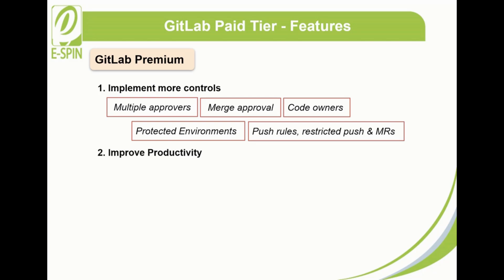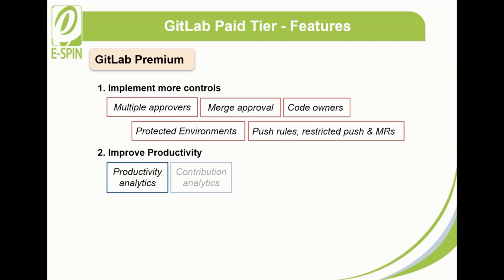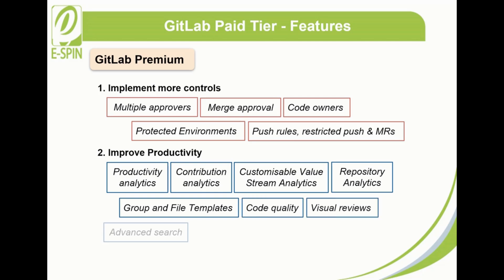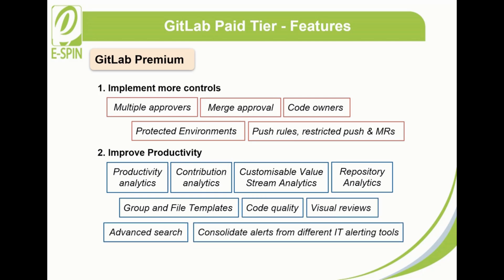2. Improve productivity. GitLab Premium streamlines login, avoids downtime, minimizes outages, and reduces latency between distributed teams to ensure productivity of the development teams. This is achieved through productivity analytics, contribution analytics, customizable value stream analytics, repository analytics, group and file templates, code quality, visual reviews, advanced search, and consolidating alerts from different IT alerting tools.